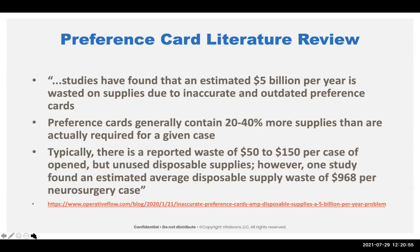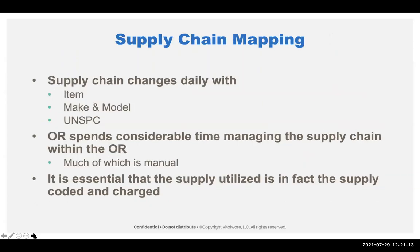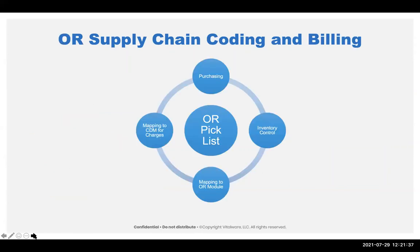Anyone who's been in the OR does not want to deal with the surgeon when they're focused on the procedure. A lot of these items are on preference cards as a guarantee — to ensure that something is there if the physician asks for it. Supply changes daily with items, makes, models, and upgrades. OR spends considerable time managing the supply chain, and a lot of charging is still done manually. If I look at the supply chain for the OR, there's a pick list in the middle, but purchasing, inventory control, mapping to the OR module, and mapping to the CDM are all part of it — four different touch points that have to go as planned.